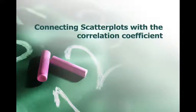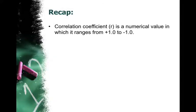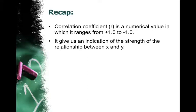What we want to look at today is we want to connect the scatterplots with the correlation coefficient, and then we're going to talk about r squared as well. Just as a recap, the correlation coefficient r is an actual value that ranges from positive 1 to negative 1, and it gives us an indication of the strength of the relationship between x and y.